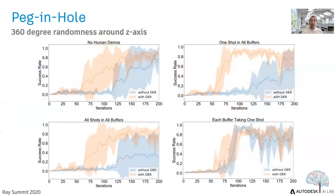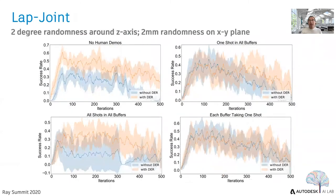These plots show comparative results on four different buffer structures for the packing hole task. With DER, training efficiency improves largely on three out of four buffer structures: no human demos, one shot in all buffers, and all shots in all buffers. For the lap joint task, DER similarly achieves better performance on two buffer structures: no human demos, and all shots in all buffers.